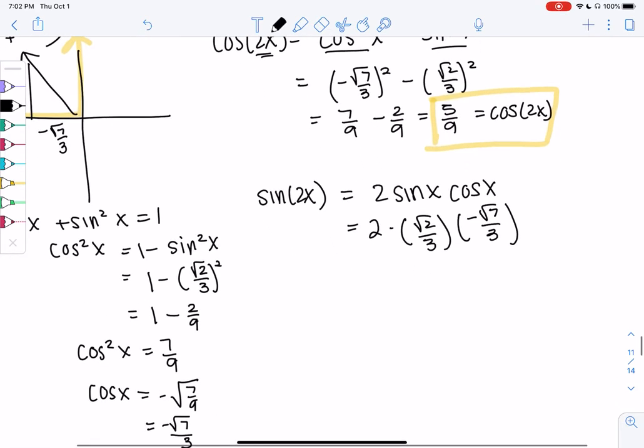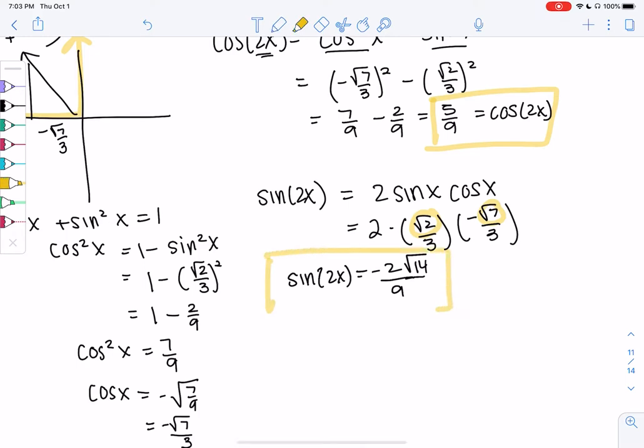And we get 2 over 9, and then we can combine square roots to get square root 14, and it's negative. So sine of 2x is negative 2 square root 14 over 9.